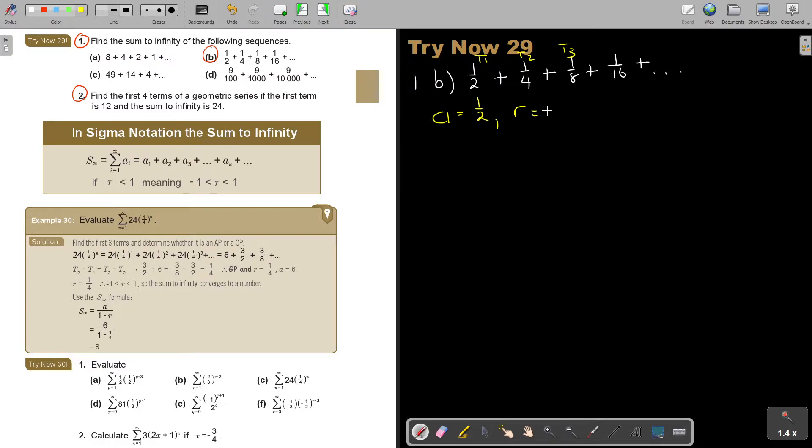Okay, so if I get R, I'm just going to say a quarter divide a half, which is equal to a quarter multiplied 2 over 1, which is a half. And I can just show you that if you say t3 divide t2, then it will be 1 over 8 divide a quarter, which will be 1 over 8 multiplied 4 over 1, which will also be a half. So, therefore, the value of R is a half.